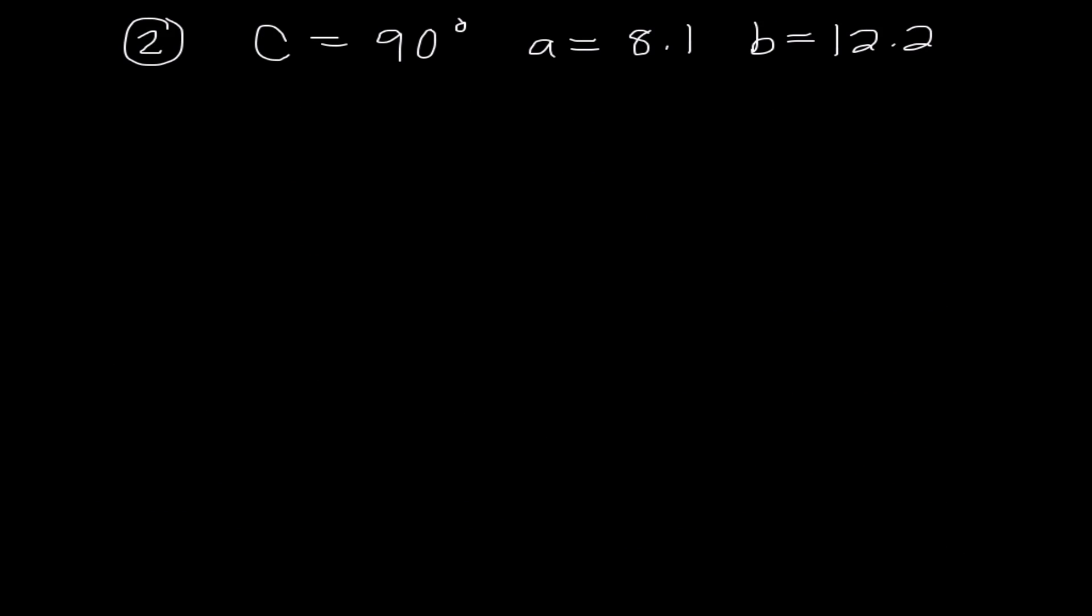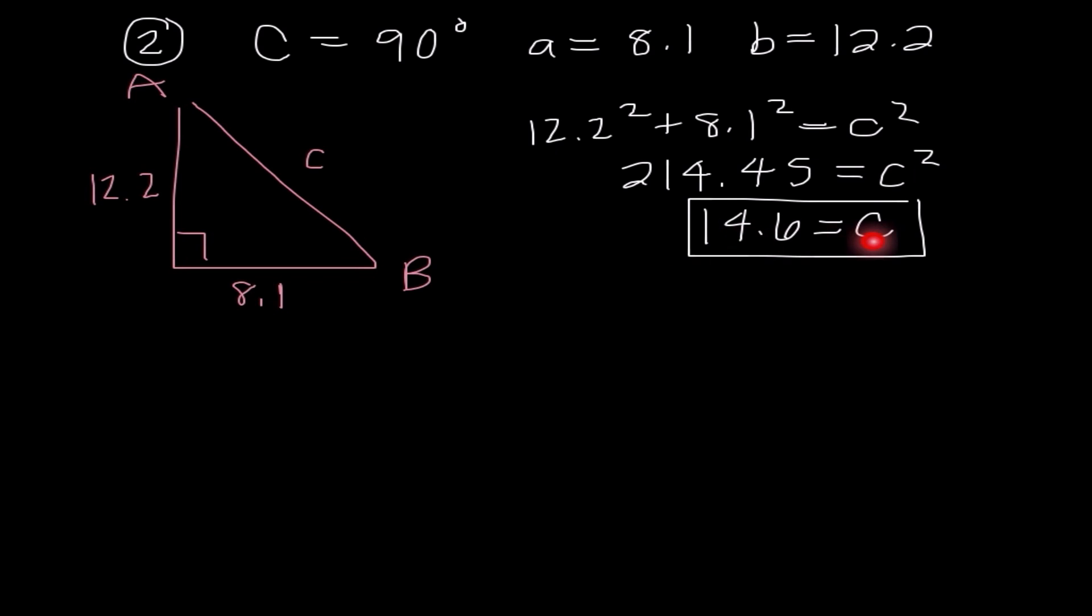Here's problem number two. This time I don't know side C. I'm going to call it A up there. I know side A is 8.1 and I know side B is 12.2. I'm actually going to start here by using the Pythagorean theorem to find our missing side. The reason why I would do this is because both of these values were given information, so I know that they are correct. I get 214.45 equals C squared, and when I square root that, I get 14.6 is equal to side C. I know that's a reasonable answer because our hypotenuse should always be the biggest side, and it is.